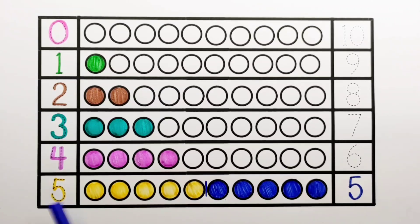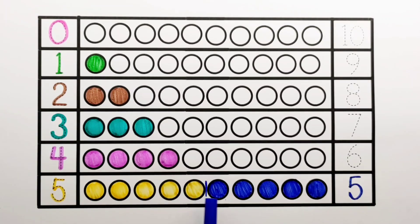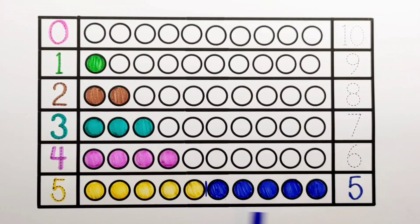5 and 5 makes 10: 1, 2, 3, 4, 5, 6, 7, 8, 9, 10. 5 plus 5 equals 10.